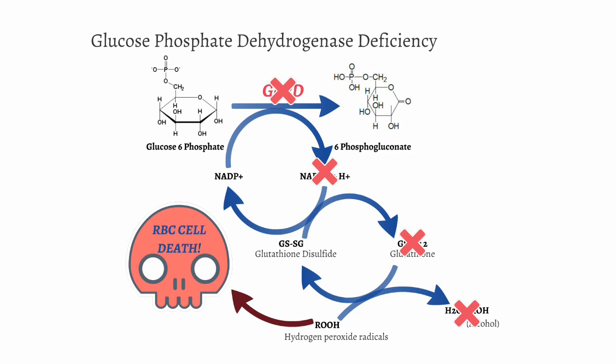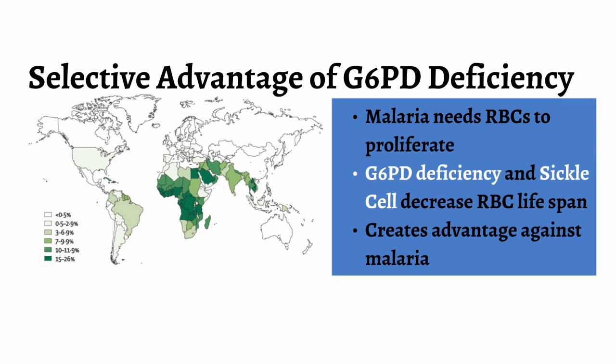Interestingly, G6PD deficiency is common in areas where malaria was endemic. Plasmodium falciparum, the infectious organism that causes malaria, requires RBCs to replicate and survive. Diseases that affect RBCs, like G6PD deficiency and sickle cell disease, result in decreased lifespans of red blood cells, thereby decreasing the sites available for malaria to proliferate. As a result, G6PD deficiency provides an advantage to individuals against malaria. Areas that are commonly affected include Africa, the Mediterranean, and parts of Asia.